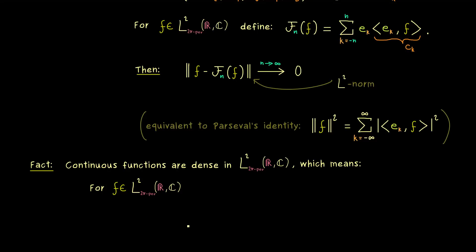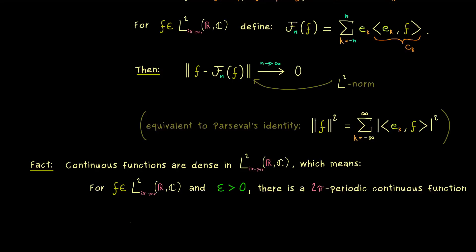Let's make that more precise. Take an arbitrary L2 function f and an arbitrary small number epsilon. For these two inputs, we find a continuous function g which is also 2π periodic, such that the difference measured with the L2 norm is less than epsilon. So we can get arbitrarily close to f with the continuous function g.